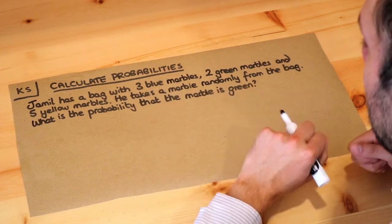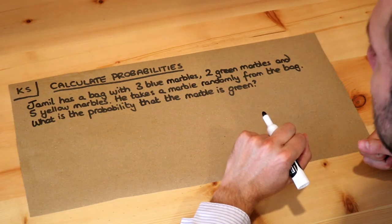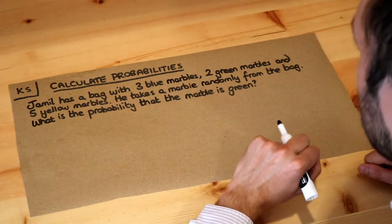In previous videos we looked at probability to mean the proportion of time, the fraction of time, we'd expect something to happen if we were to keep on repeating it.